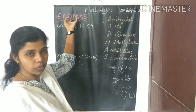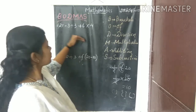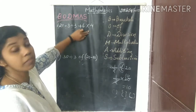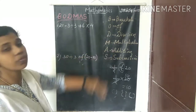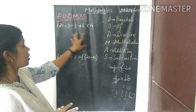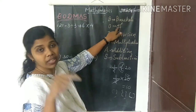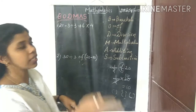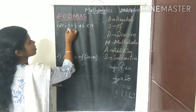This is called the BODMAS rule — one of the most important rules in our mathematical system. Now let's look at a question that has minus, division, plus, and multiplication — four operations together. First, we check: are there any brackets? No brackets. Any 'of' function? No. So next we do division.